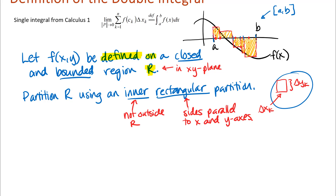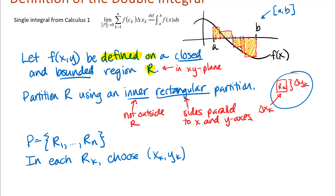Once we chop the region into pieces, we pick a point in each piece. So in each rectangle Rk we choose a point (xk, yk). In the single integral we chose a point ck in each sub-interval. The idea is the same: you choose a point in each piece to get a function output.